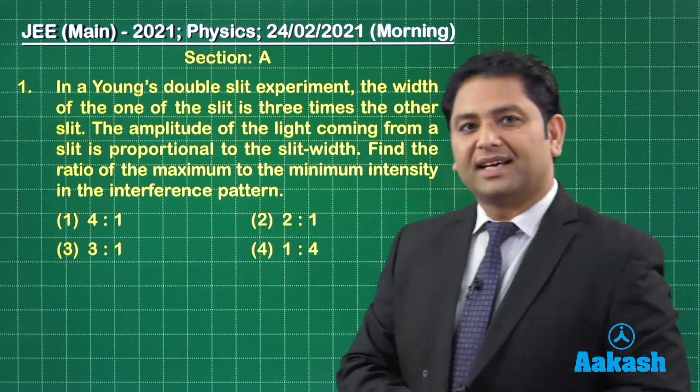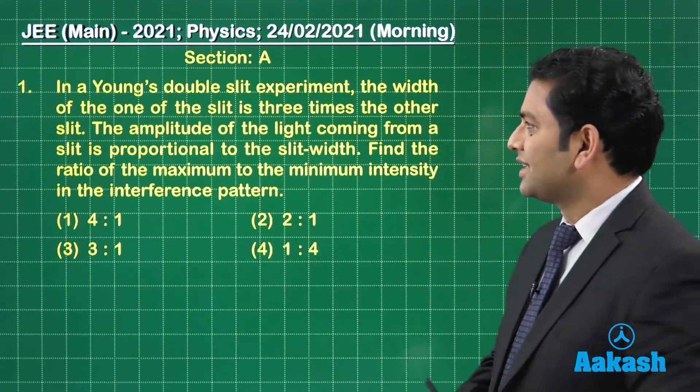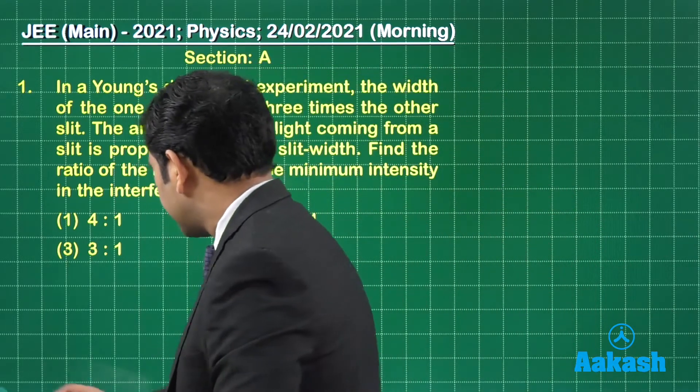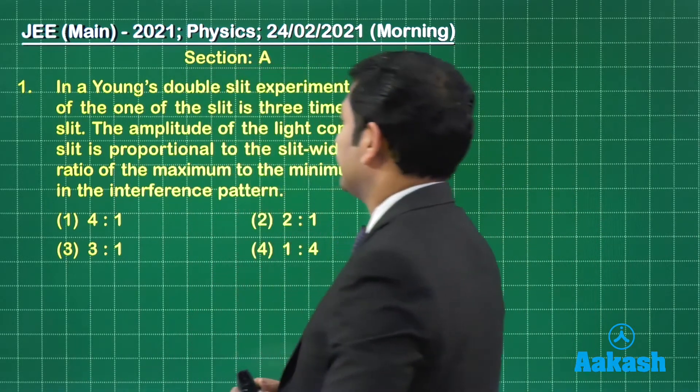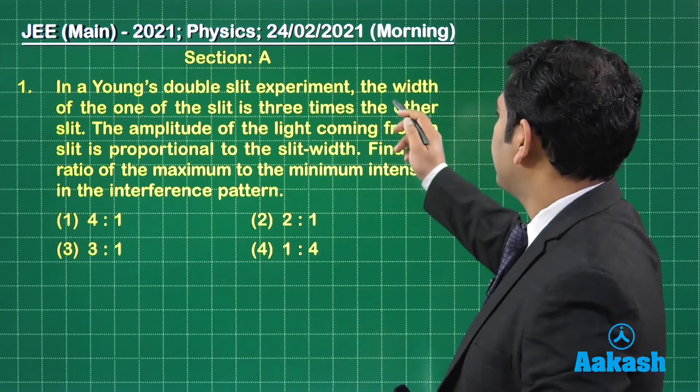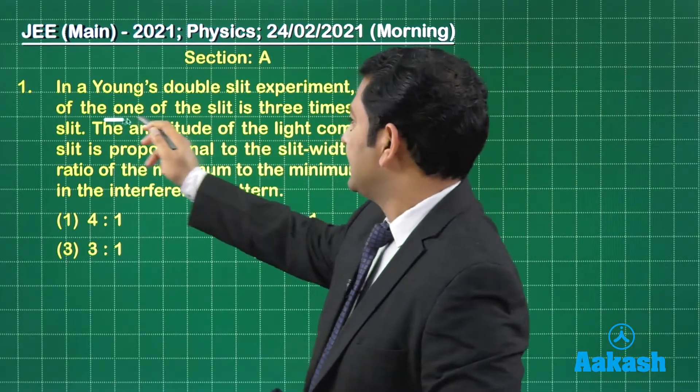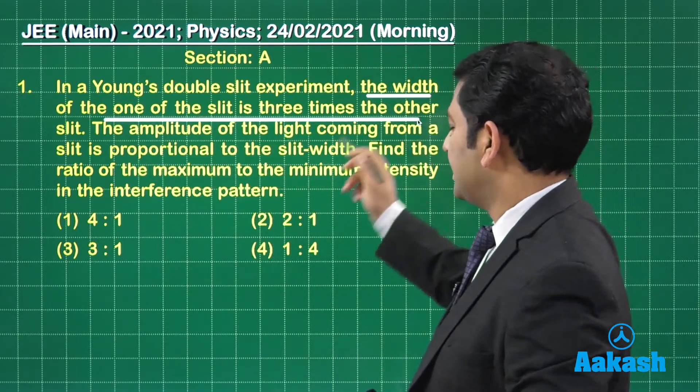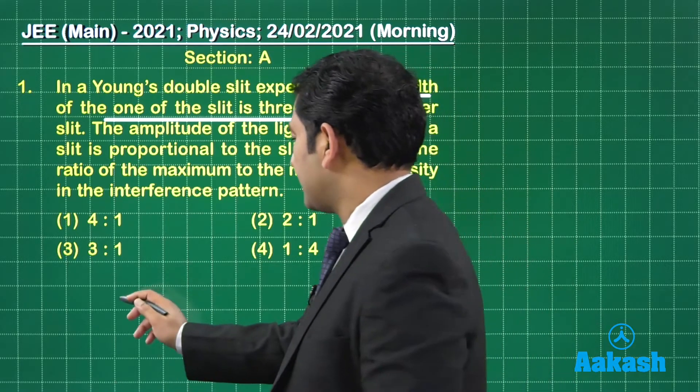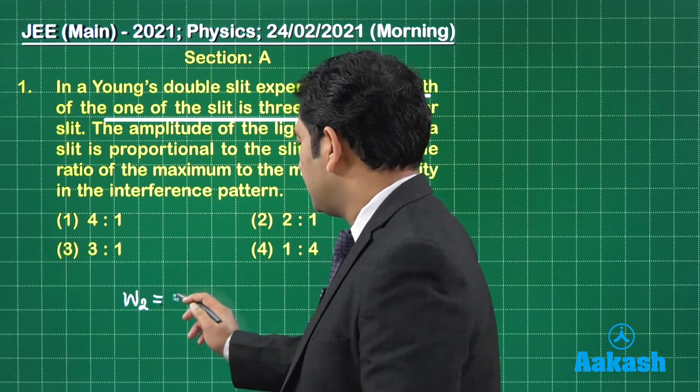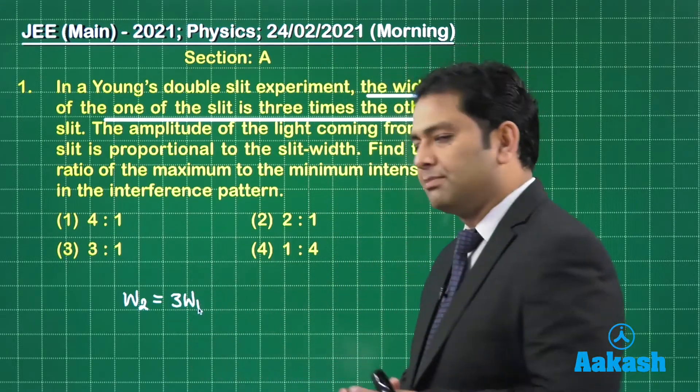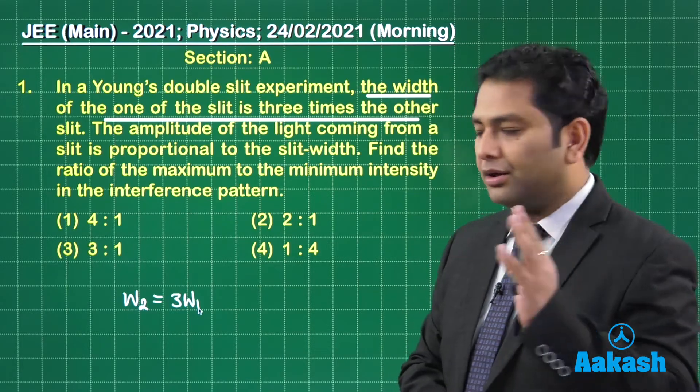The first question is from Wave Optics and you could see the question has been put from YDSE, the Young's Double Slit Experiment. Now what does it say? In a YDSE, the width of one of the slit is three times the other slit. So that means I can write it something like this, W2 equals three W1 where W determines the width of the slit.